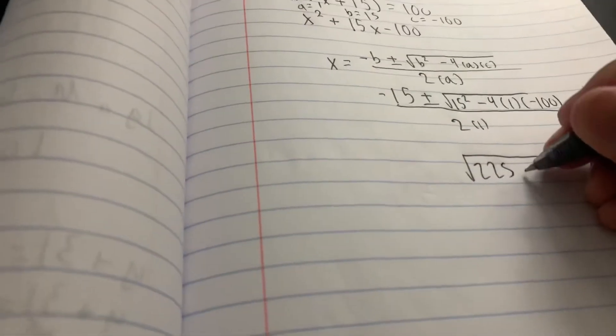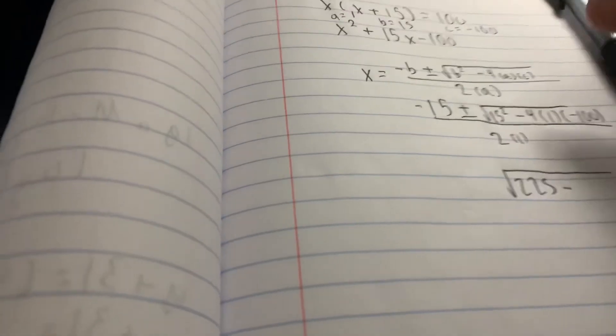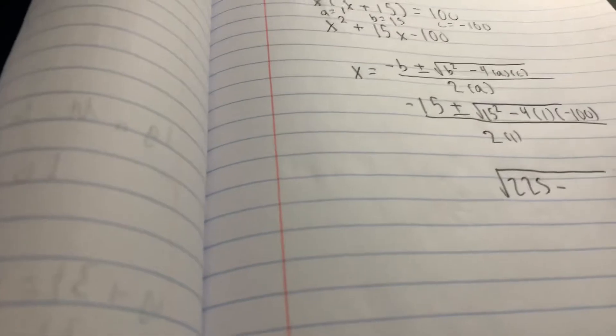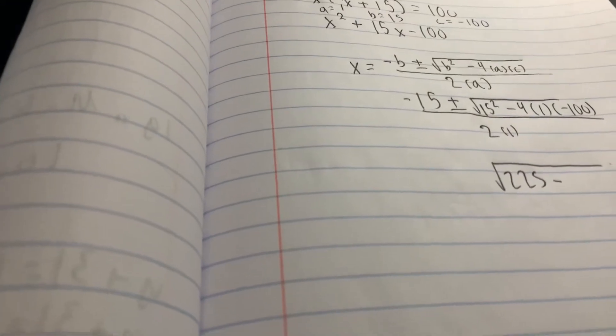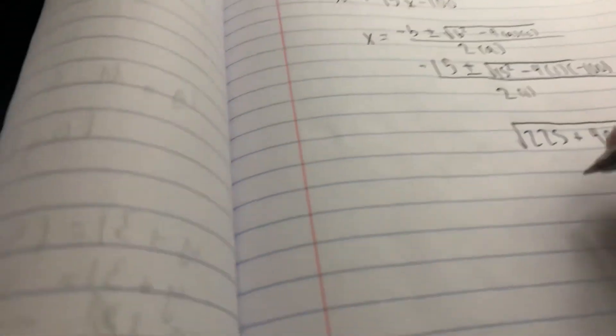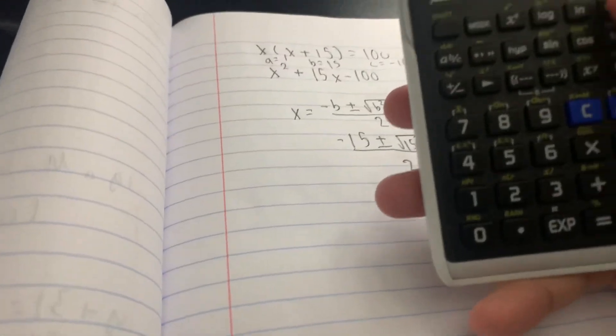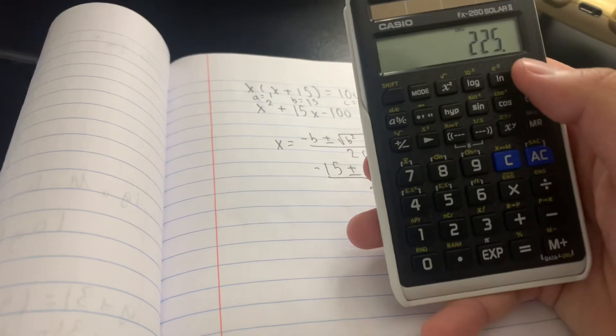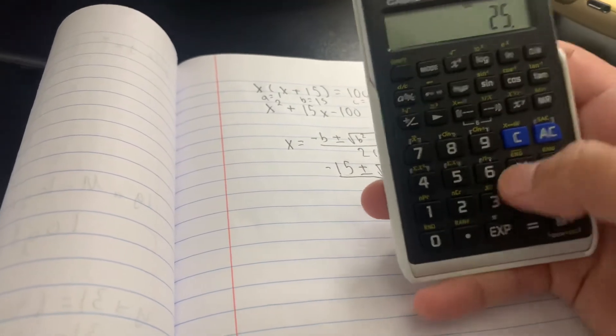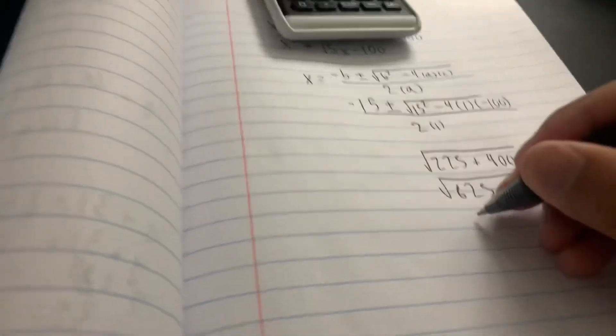So 225 minus, 4 times negative 100, or negative 4 times 100. So it would be positive 400. So the square root of 625. I feel like that's something I know. Either way, let's go ahead and put it in. Let's just try 25 times 25. Yeah, 625, so it's 25. I had a feeling about that one.